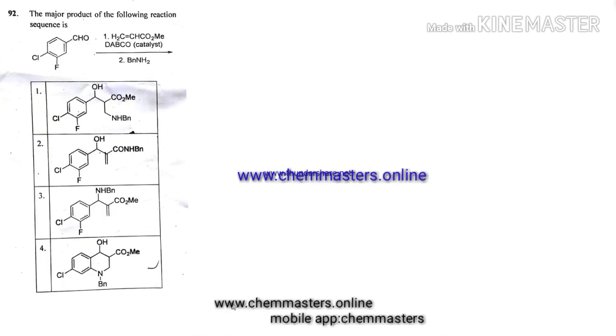Hi guys, now we are analyzing POTC organic problem of CSIR-NET June 2019 chemical sciences. Just look at the given problem: the major product of the following reaction sequence. Look at the given substrate - we have aldehyde functional group on it and other substrate that is methyl acrylate, followed by DABCO as a catalyst and followed by benzyl amine.